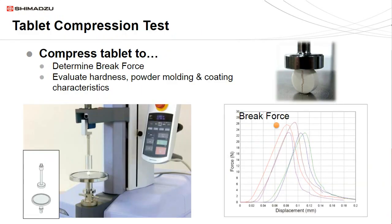This first example is a tablet compression test. In this method, a tablet is placed between two plates and compressed at a constant rate of speed until it fractures. The force-displacement plot shows a rise in force, a peak, and a drop in force. The rise in force corresponds to the compression or loading of the tablet. The peak represents the initial fracture, and the drop in force corresponds to the tablet being crushed. The resulting peak value gives us the tablet's fracture strength and can be useful for evaluating the hardness, powder molding, and surface coating characteristics of these tablets.